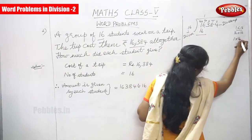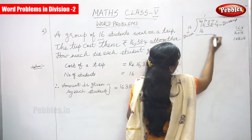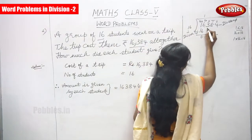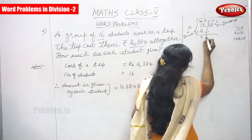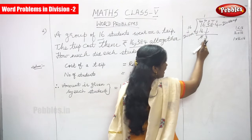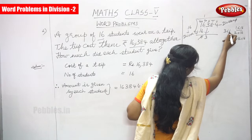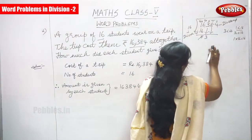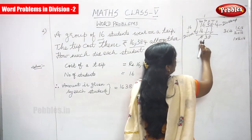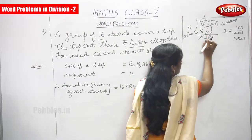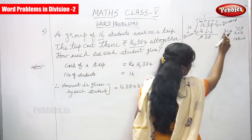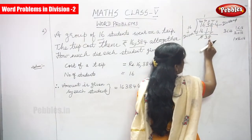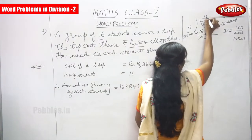16 minus 16 equals 0. Bring down the next digit, which is 3. Since 3 is less than 16, you can't divide. Bring down the next digit as well — that is 8 — making it 38. Since you brought down two digits at a time, you have to put 0 in the quotient.